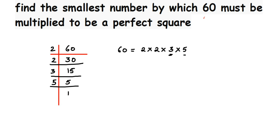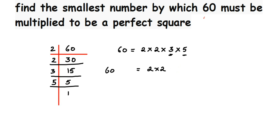Perfect square numbers have proper pairs of prime factors, but here they're not all paired. So I need to introduce one more 3 and one more 5 to create proper pairing and make the number a perfect square. Whatever I multiply on the right side, I must also multiply on the left side — it has to be balanced. So: 60 = 2×2 × 3×[3] × 5×[5].